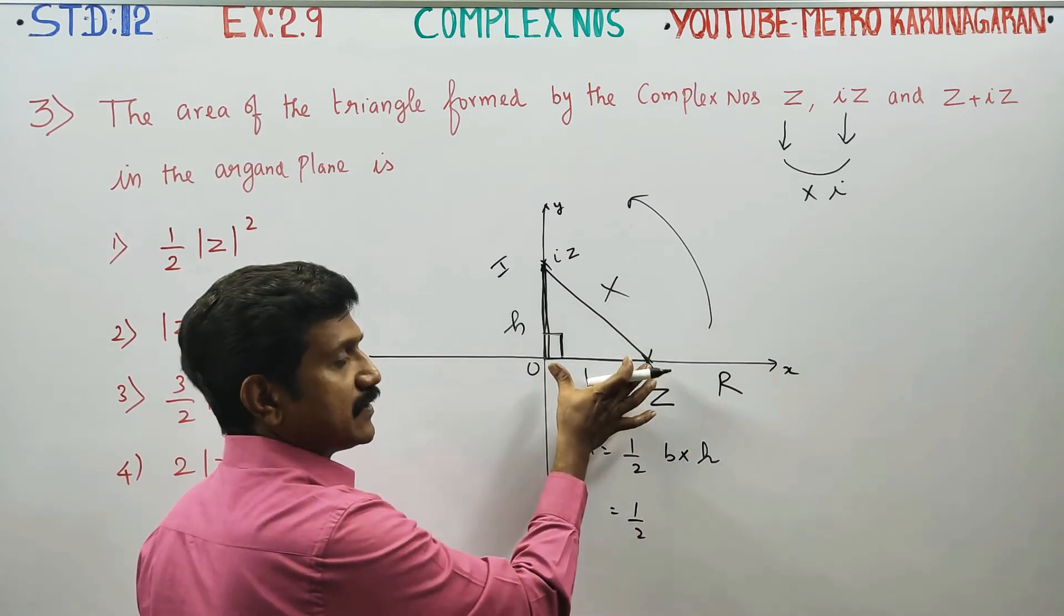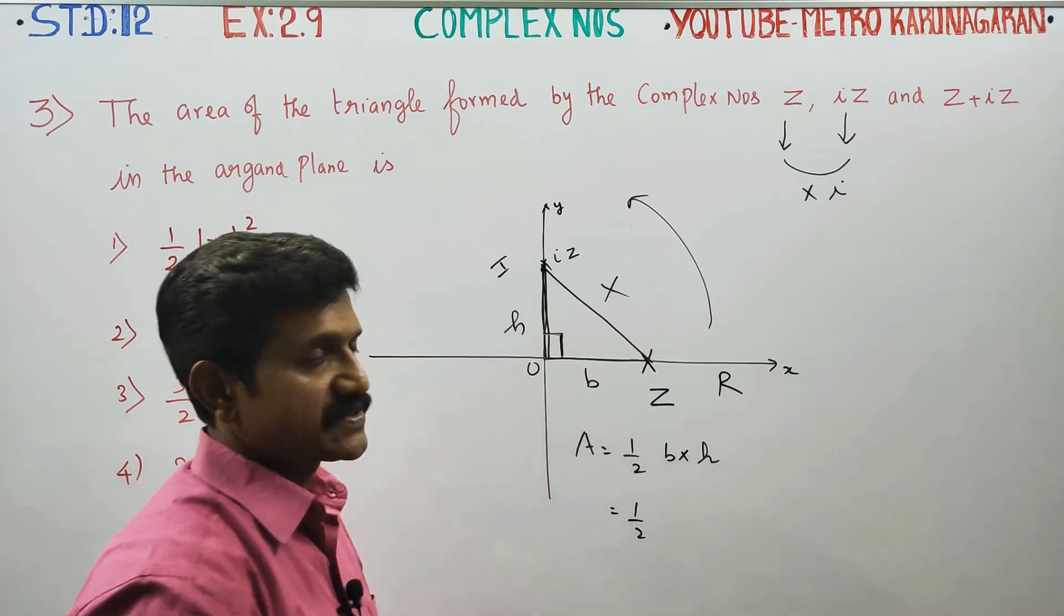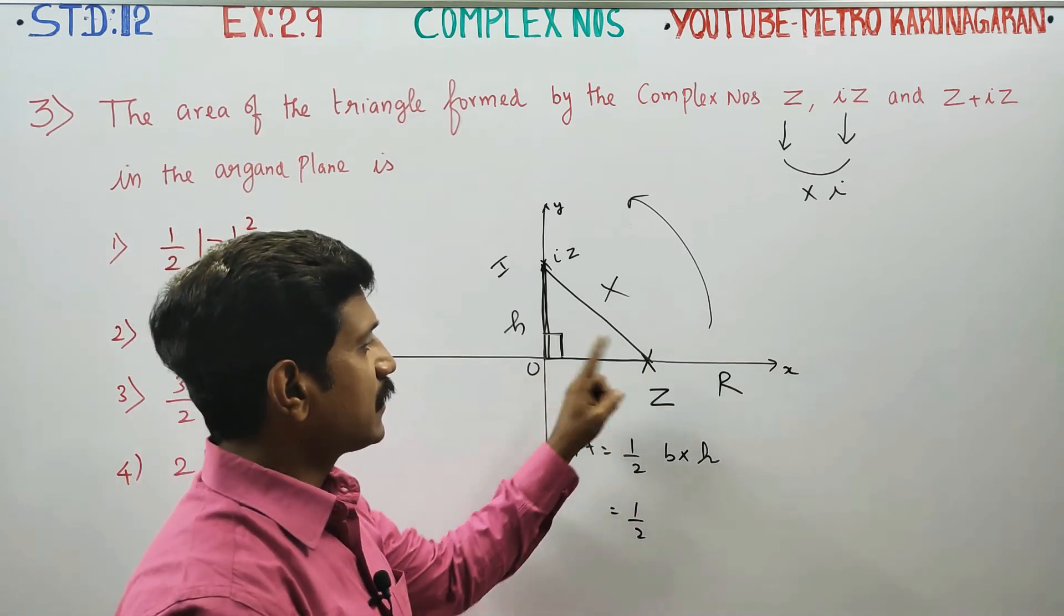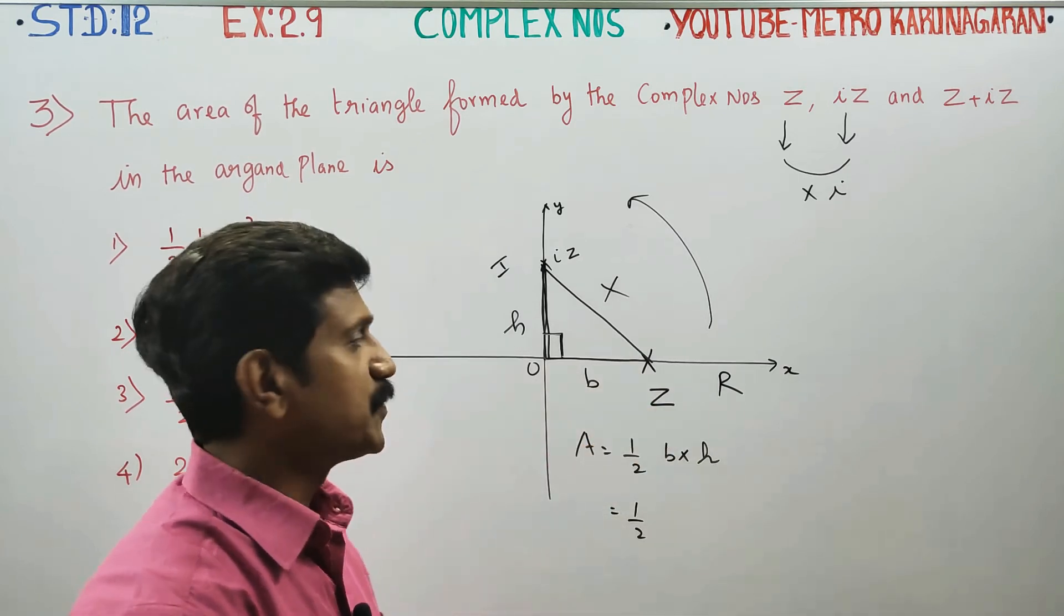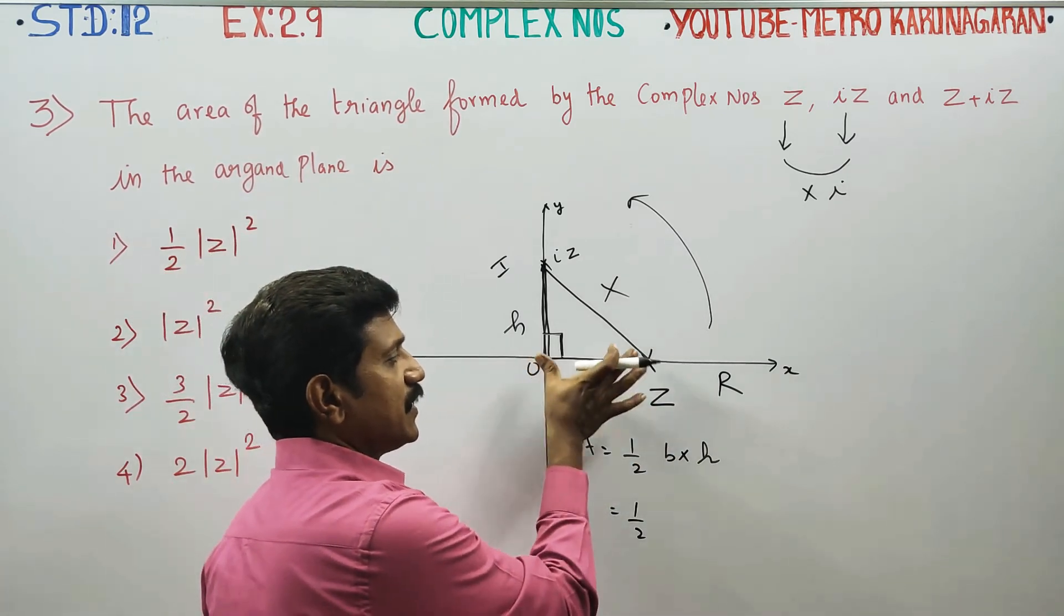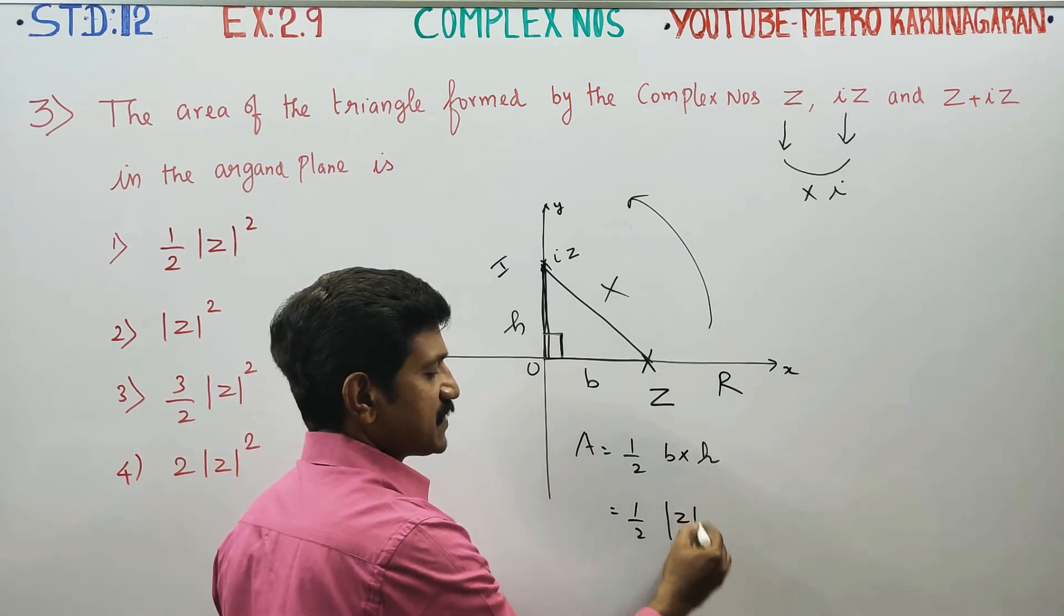Half base is length. We have two complex numbers. We have difference and modulus. We have origin. This distance is modulus of Z.